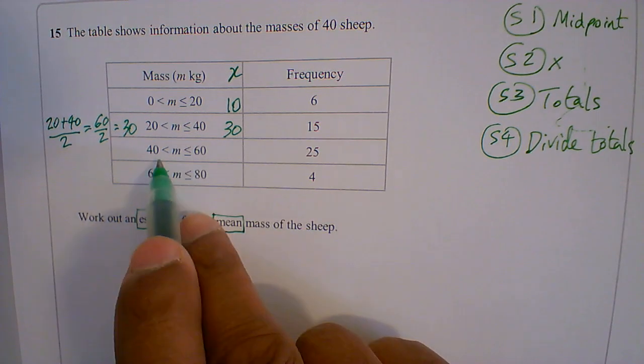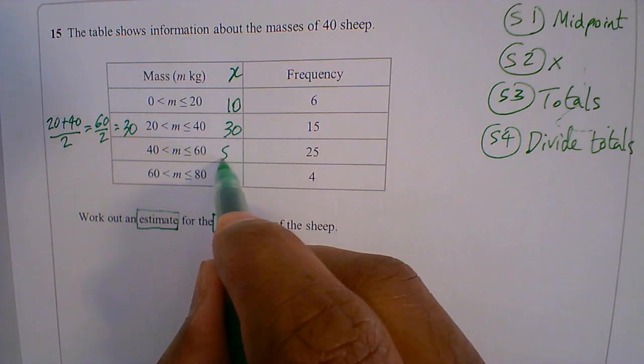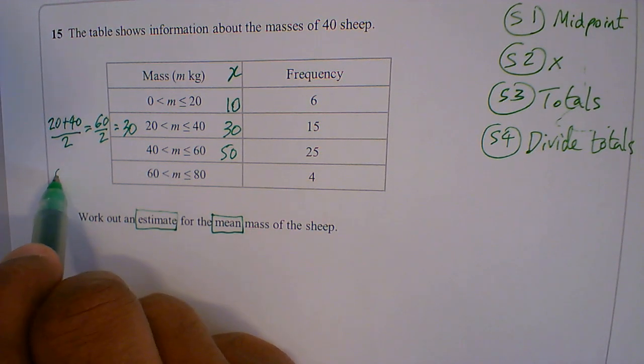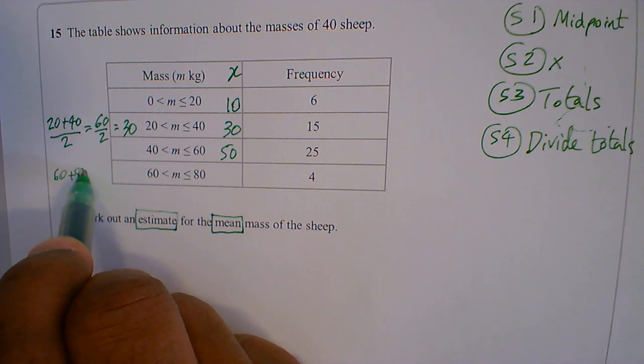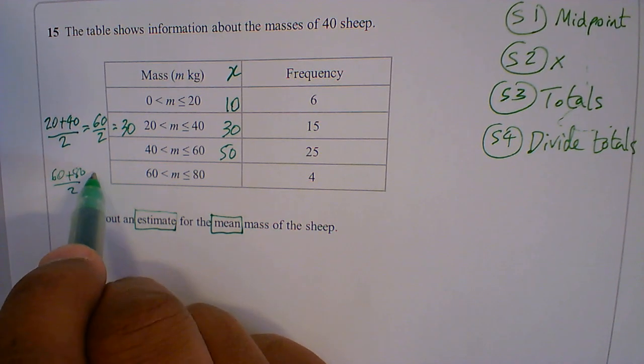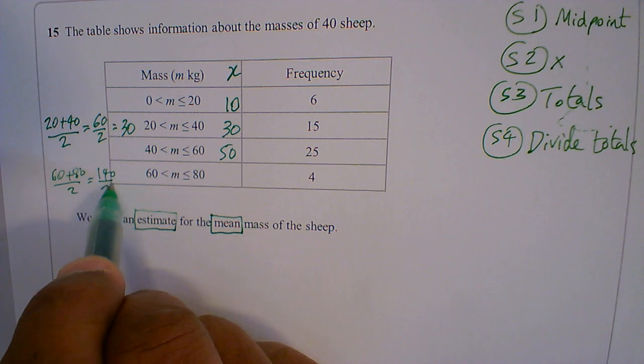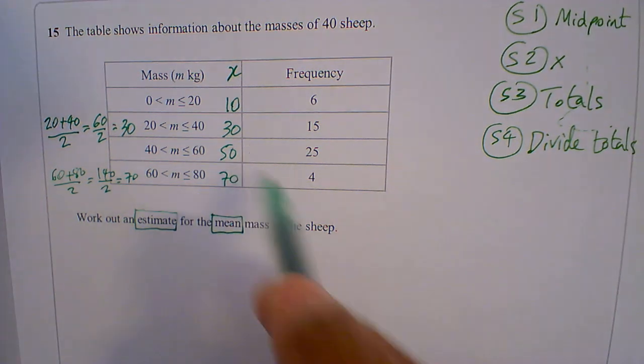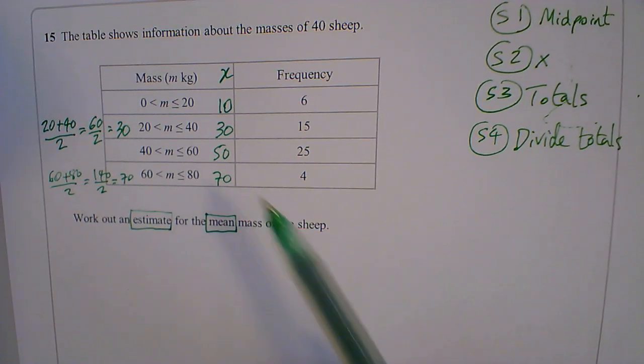What's in the middle of 40 and 60 must be 50. And again the last one, I will add them together, work them out, 60 plus 80, divided by 2. 60 plus 80 is 140, divide them by 2 gives me 70. Okay, and it's a calculator test so you can add them and divide by 2 as well.